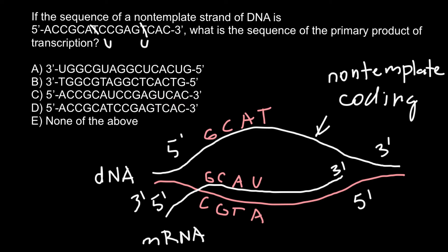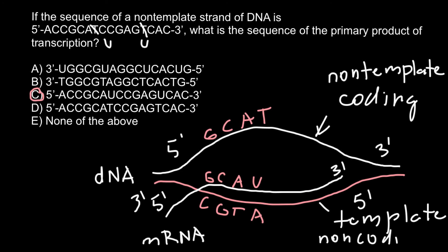So the answer is C. Just for your information: the bottom strand is the template strand of the DNA, also called the non-coding strand. The top strand is the coding strand, also called the positive strand, and the bottom strand we call the negative strand.